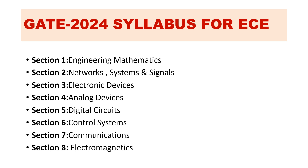Here are the eight sections we need to study for cracking GATE 2024 in ECE. Section one is Engineering Mathematics, section two is Networks and Systems and Signals, section three is Electronic Devices, section four is Analog Circuits, section five is Digital Circuits, section six is Control Systems, section seven is Communications, and section eight is Electromagnetics.